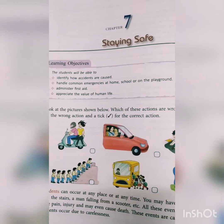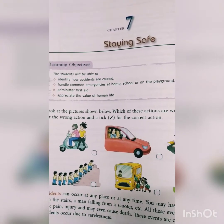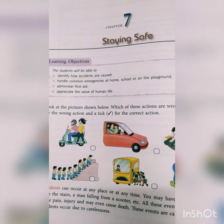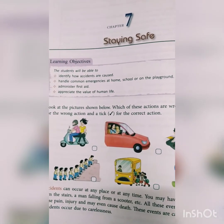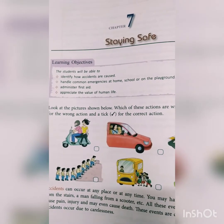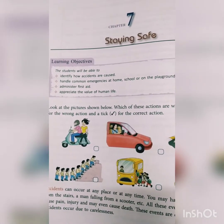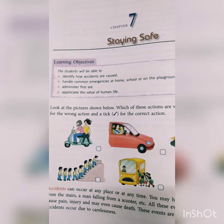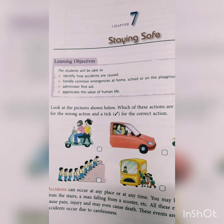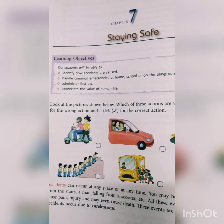Chapter number seven: Staying Safe. As you all know, accidents can occur at any place or at any time — at home, at school, or anywhere — when we are careless. Most accidents occur due to carelessness.